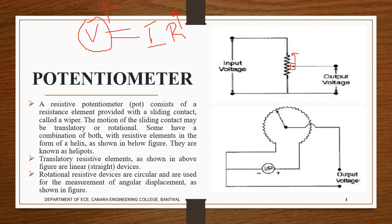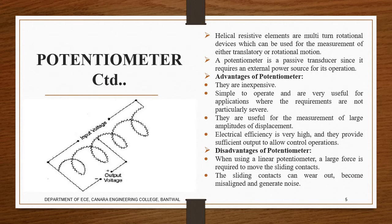This linear type is called a translatory potentiometer — it operates in a straight line. Another type has the resistance arranged in a curve, and the sliding contact moves rotationally; this is measured in terms of angular displacement.